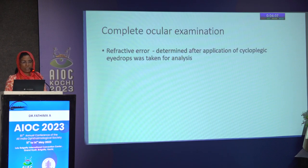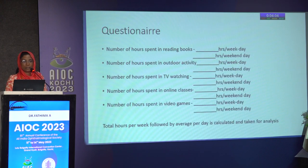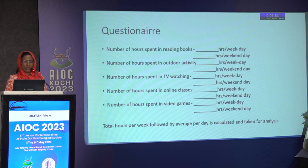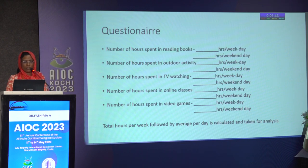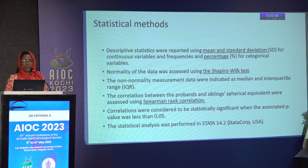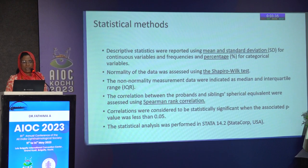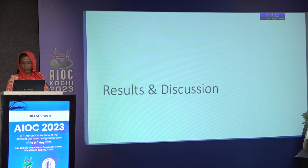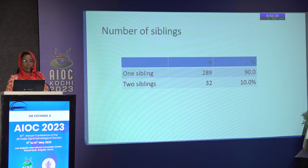After complete ocular examination, refractive error was confirmed with cycloplegic drops. Parents were given a questionnaire about children's time spent in near work, intermediate and distant activity, measured in hours per weekday, hours per weekend day, and total hours per week, from which an average per day was derived. Statistical analysis included mean and standard deviation, percentage analysis, Shapiro-Wilk test, and Spearman rank correlation.